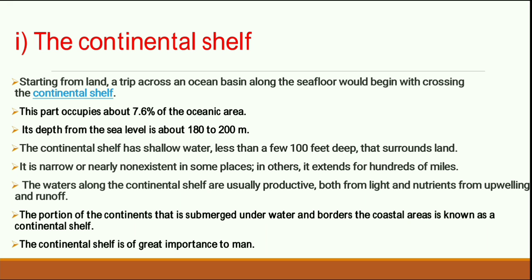The continental shelf has shallow water, less than a few hundred meters deep, surrounding the land. It is not consistent everywhere — in some places it is very narrow or nearly non-existent, while in others it extends for hundreds of miles. The portion of the continents submerged under water and bordering the coastal areas is known as the continental shelf, and it is of great importance to humans.